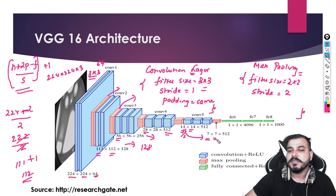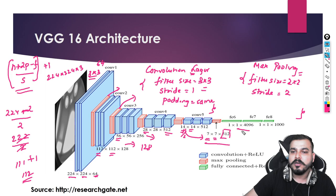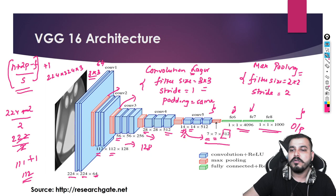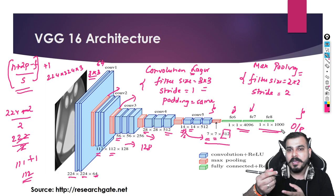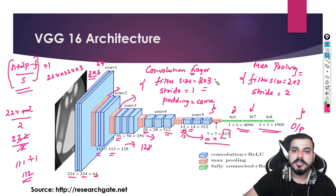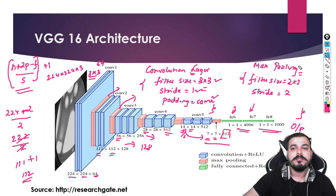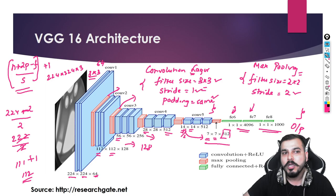From 14 we get 7×7 with 512 kernels. For the fully connected layer, multiplying 7×7×512 gives 1×1×4096. The next two fully connected layers also have 4096 nodes each. The final output is 1000 based on ImageNet. Two key points: in every convolution layer the filter size is 3×3, stride 1, padding same; in every max pooling layer the filter size is 2×2 and stride is 2, halving the image size each time.